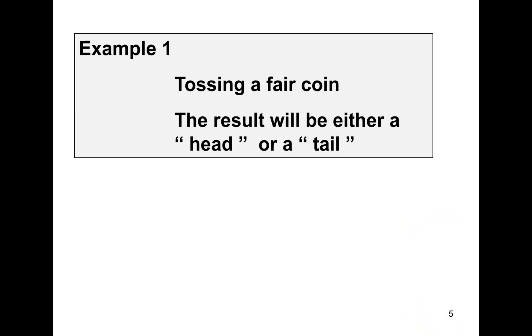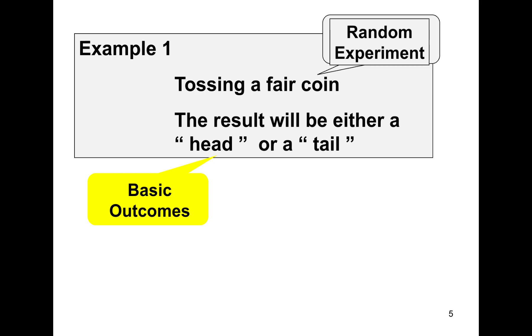Example number 1. Assume that we are tossing a fair coin. The result will be either a head or a tail. So we may say that the activity tossing a fair coin is the random experiment. And the result, which is head or tail, are the basic outcomes. Thus, the sample space S, or the element of sample space S, are H and T, where H represents head and T represents tail.